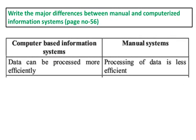You can refer to page 56 in your textbook and write the major differences between manual and computerized information systems. One key difference: in a computer-based information system, data can be processed more efficiently, but in a manual system, processing of data is less efficient.